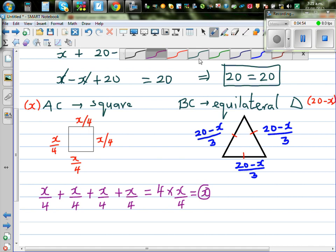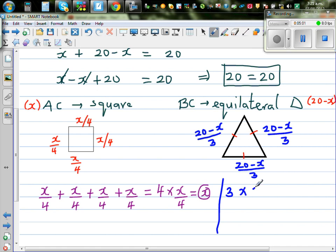This is 3 lots of 20 minus x over 3. So that is 3 times 20 minus x over 3. Which is 20 minus x. It does make sense.